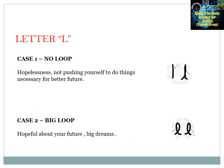Now, Letter 'L' has two cases. Case 1 — No loop: indicates hopelessness and not pushing oneself to do things necessary for the future. Case 2 — Bigger loop: the bigger the loop, the more hopeful about the future the person is — focused and dreaming big dreams.